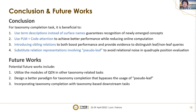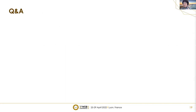In conclusion, for taxonomy completion it is beneficial to: first, use term descriptions instead of surface names; second, use pre-trained language models and cross-attention; third, introduce sibling relations; and fourth, substitute relation representations involving the pseudo-leaf. Potential future works include: utilizing QEN modules in other taxonomy-related tasks; designing a better paradigm for taxonomy completion that bypasses the usage of pseudo-leaf; and incorporating taxonomy completion with taxonomy-based downstream tasks.